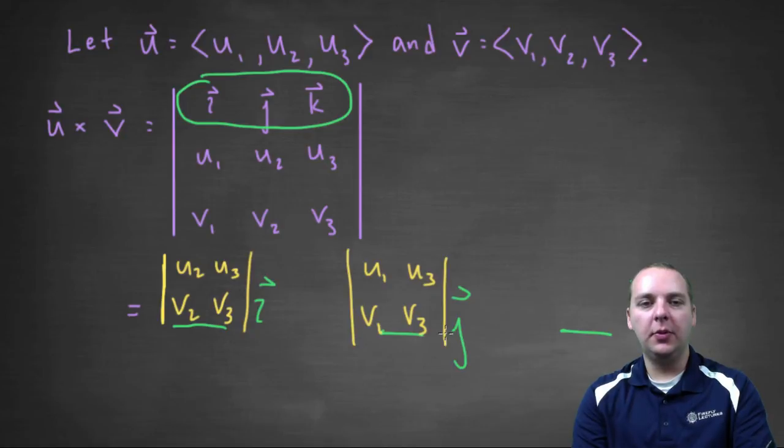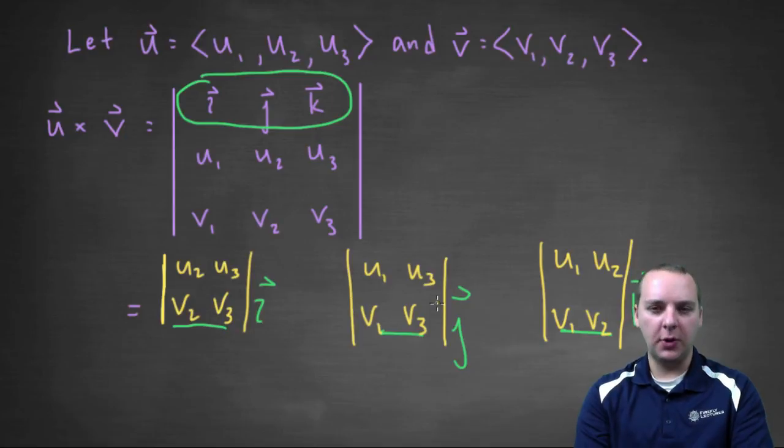And then in a similar way we'll have u1, u2, v1, v2 here. So I have these three mini determinants here, called minors.